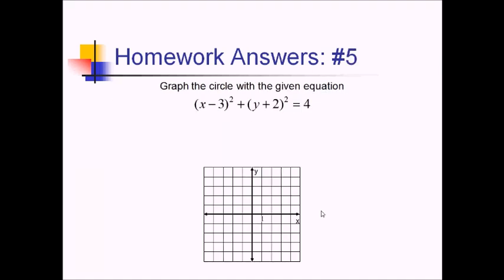For number five, we want to graph the circle whose equation is given. The center is (3, −2), which is right down here. The radius is the square root of 4, which is 2. So we go 2 in every major direction — up 2, right 2, down 2, and left 2 — then connect the dots, and there's our circle.